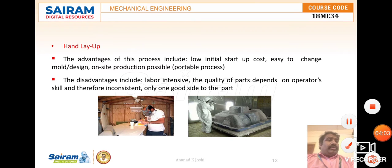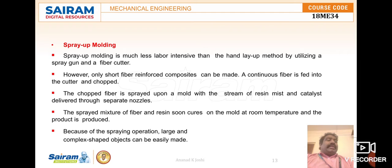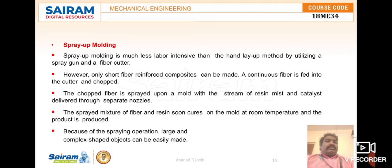The next process is spray molding, which is much less labor intensive than hand layup by utilizing a spray gun and fiber cutter. Only chopped fiber reinforced composites can be made by this method. Continuous fiber is fed into a cutter, and the chopped fiber is spread onto the mold with a stream of resin mist and catalyst delivered through separate nozzles. The sprayed mixture cures at room temperature, enabling large and complex shapes to be easily formed.